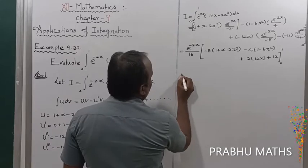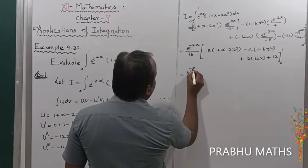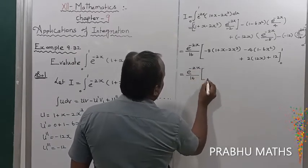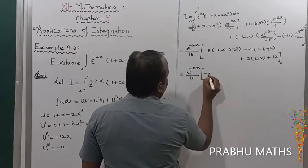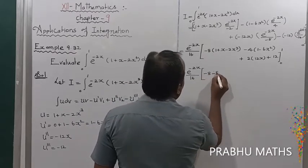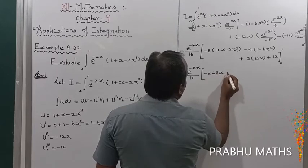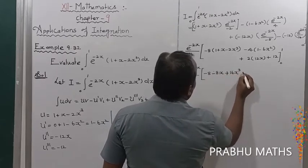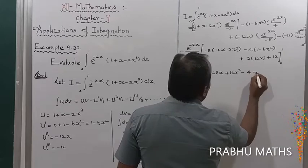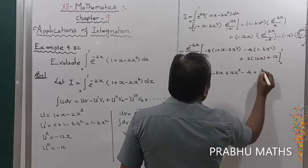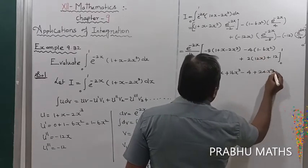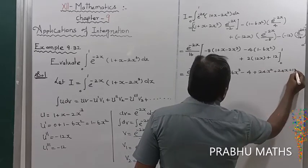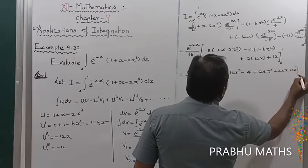So the expression equals e^(-2x) / 16 into: -8 - 8x + 16x³ - 4 + 24x² + 24x + 12, with limits 0 to 1.